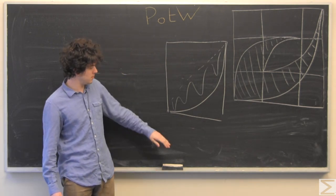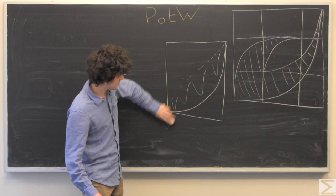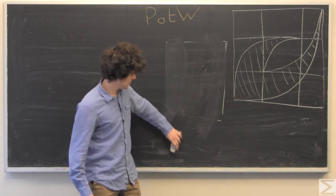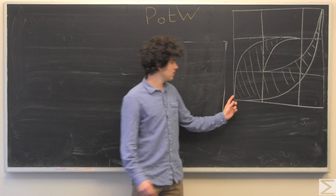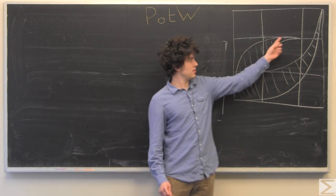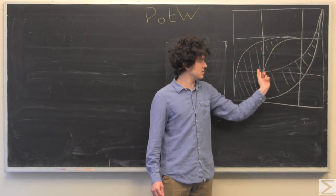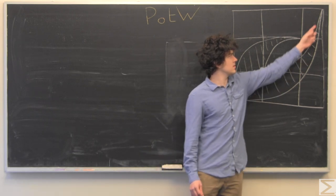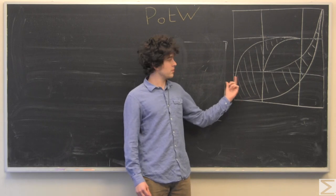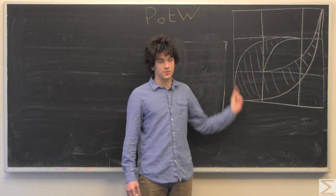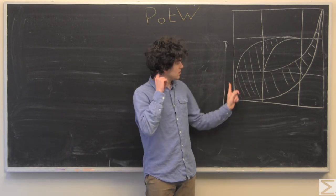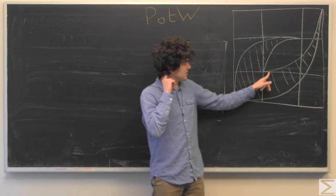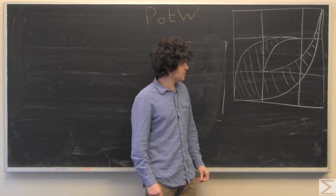But what you might notice is that there's a symmetry in the problem. So this outer quarter circle has the same radius as this inner one. So what we're going to do ultimately is flip the outer one so that this line is exactly on this line.